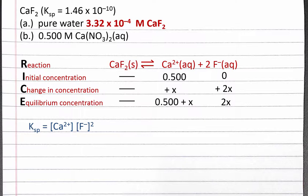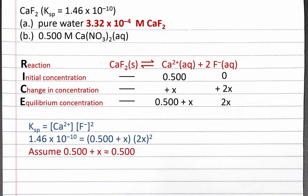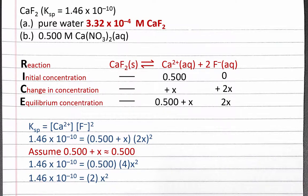At equilibrium, we'll have 0.5 plus x for calcium and 2x for fluoride ion concentrations. Our equilibrium constant expression is the same: the solubility product constant equals the concentration of calcium ions times the concentration of fluoride ions squared. But this time we have 0.5 plus x times the quantity 2x squared. To solve this, we'll make a simplifying assumption: only a very small amount of calcium fluoride will dissolve in solution, so 0.500 plus x is approximately equal to 0.500. This simplifies the math considerably, so we replace 0.500 plus x with just 0.500 and square 2x to get 4 times x squared. Since 0.5 times 4 is 2, we divide both sides by 2, then raise both sides to the 1/2 power to solve for x.